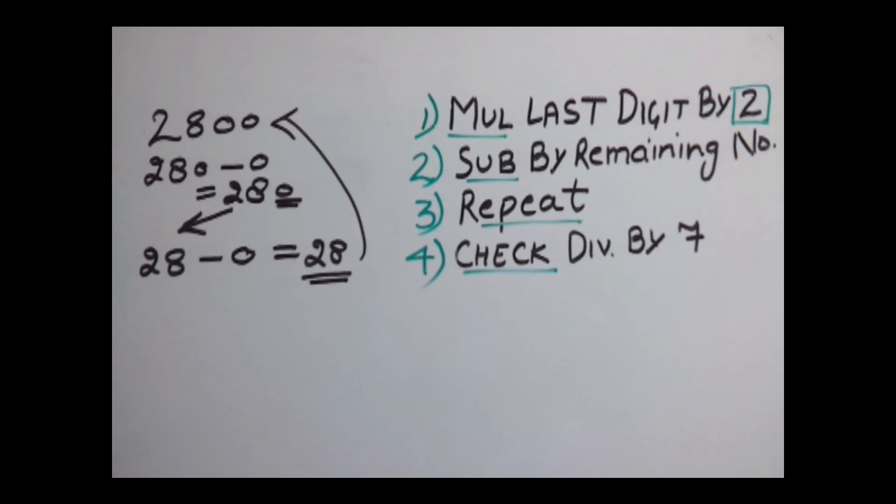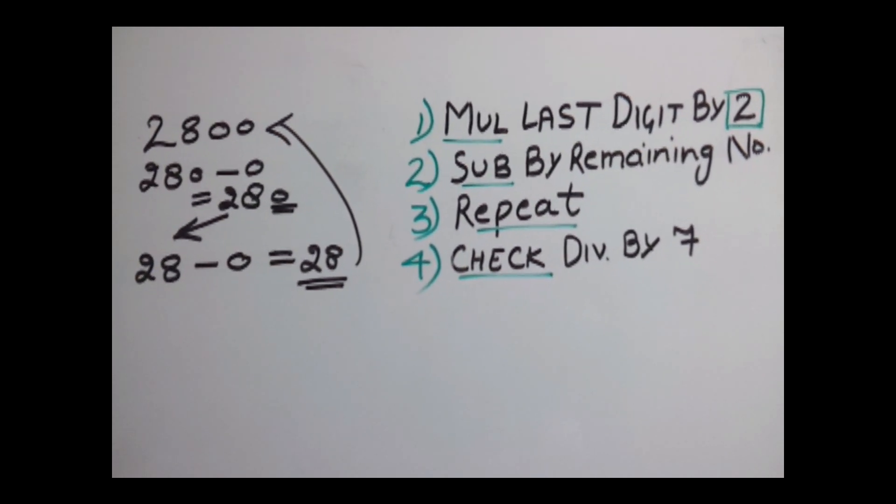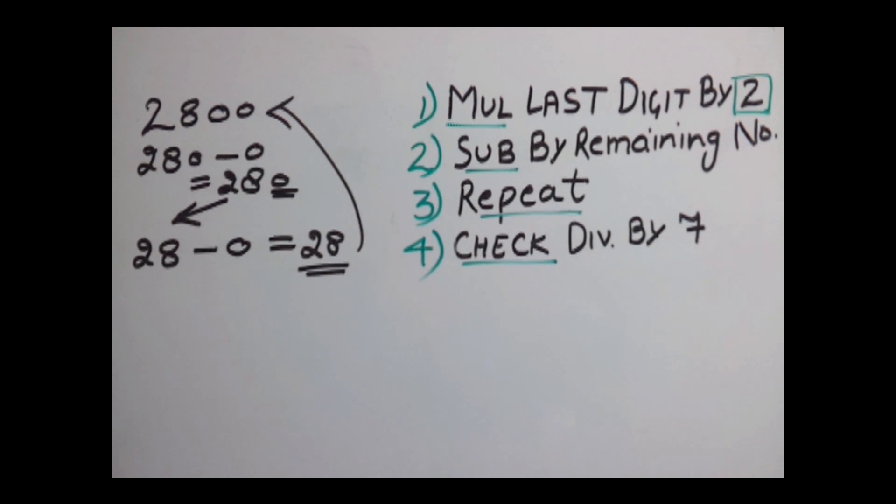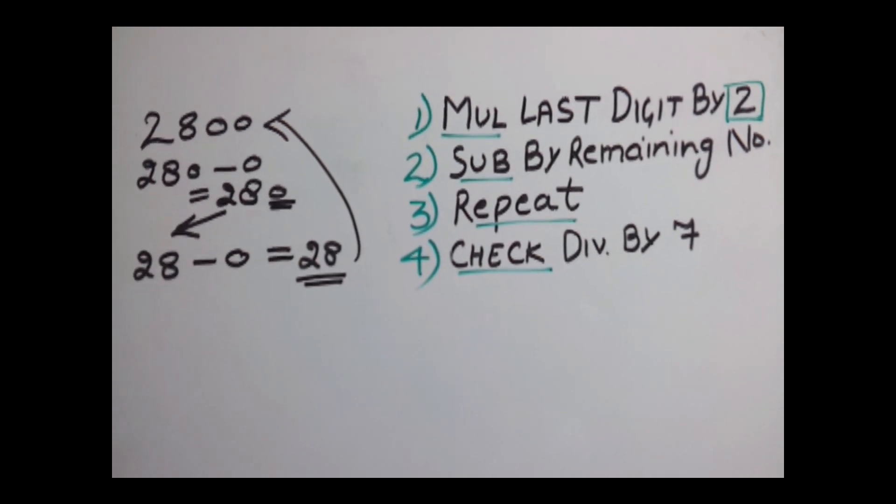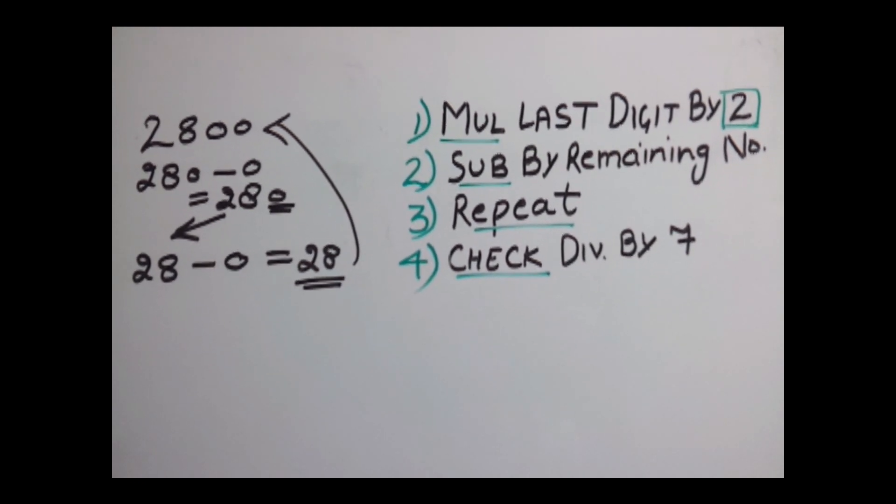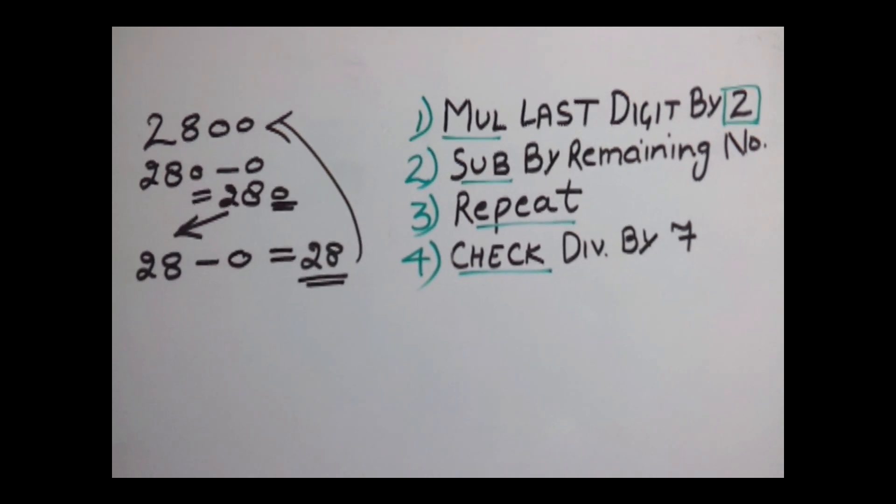So our number is also divisible by 7. In this way, in a few seconds, you can quickly find out whether a number is divisible by 7 or not. For more tricks, please visit IndiaEdu.com.